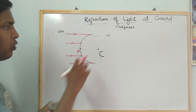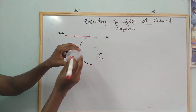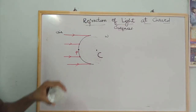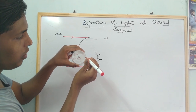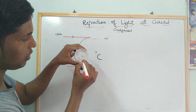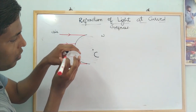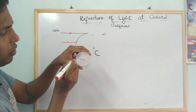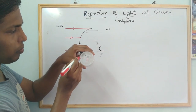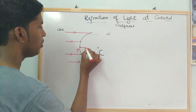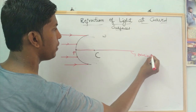So what is C? C is called the center of curvature. This is the spherical part — if I locate the midpoint of the sphere, that midpoint is called the center of curvature. Now, on the curved surface itself, the midpoint is called the pole. So, the midpoint of the sphere is the center of curvature, and the midpoint on the curved surface is the pole. If you join these two — pole and center of curvature — we call it the principal axis.